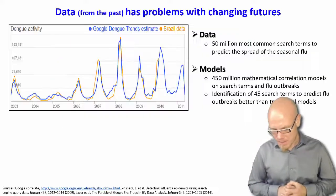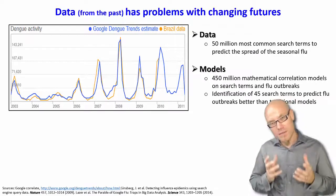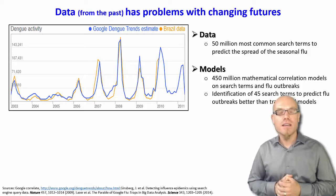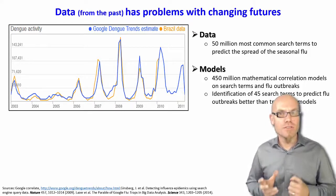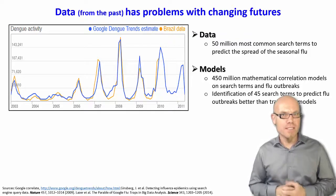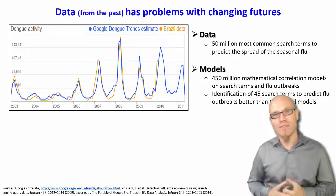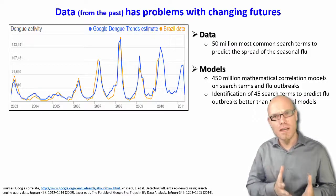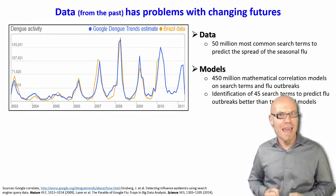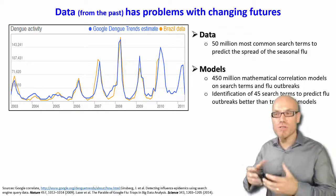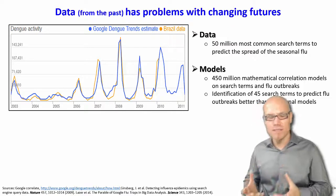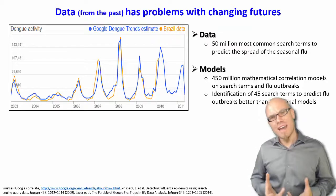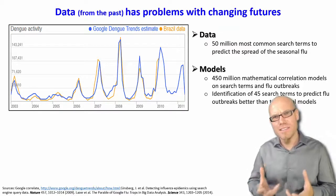A famous example of big data usage is what some researchers from Google did: they used Google search trends to predict the spread of diseases — for example, the flu or dengue fever. The problem with disease spread data is that it always comes a couple of months after the fact, because it's collected through hospitals, pharmacies, surveys, or health registries, and by the time it's compiled, several weeks have already passed.